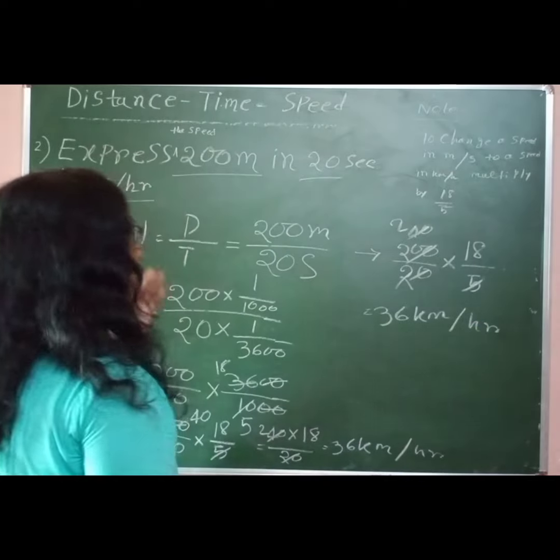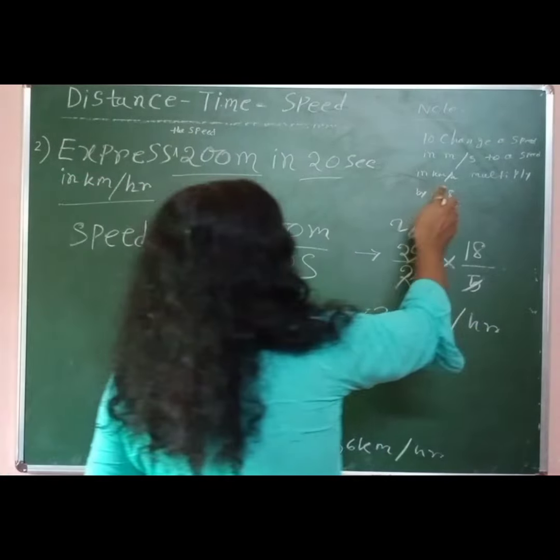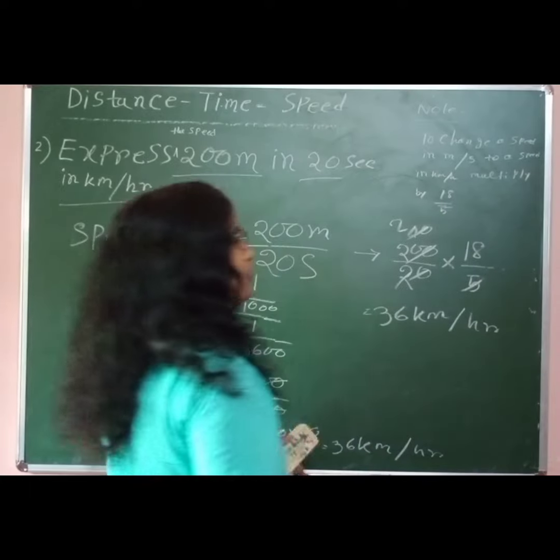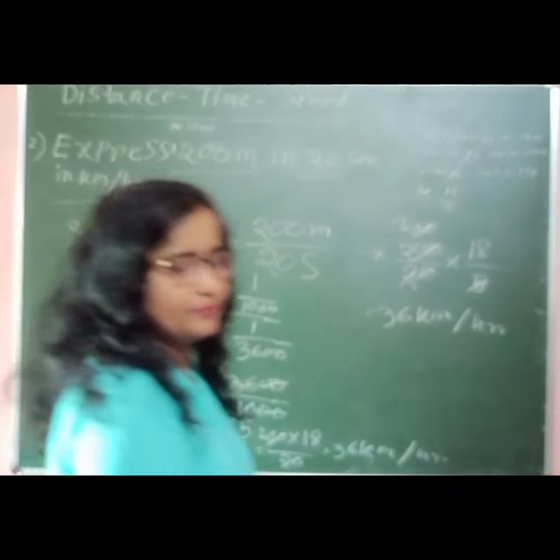Actually to change the speed in meters per second to speed in kilometers per hour, simply we have to multiply it by 18 by 5.